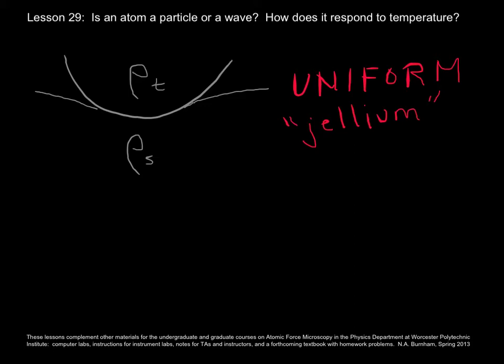The first question you might have is, is the atom a particle or a wave? You might have heard this term, wave-particle duality, and what that means is, in quantum mechanics, sometimes atoms and electrons and protons behave as waves, and sometimes they behave as particles. So the question is, which way do atoms behave for our experiments?